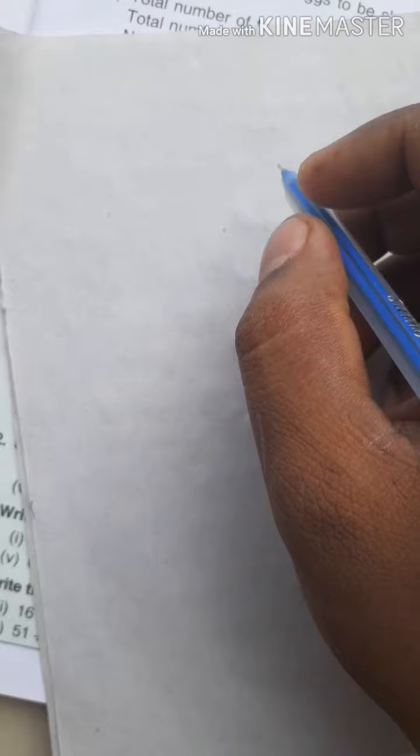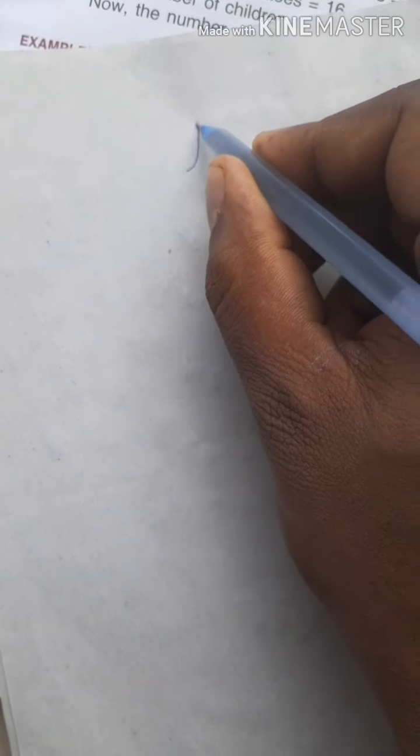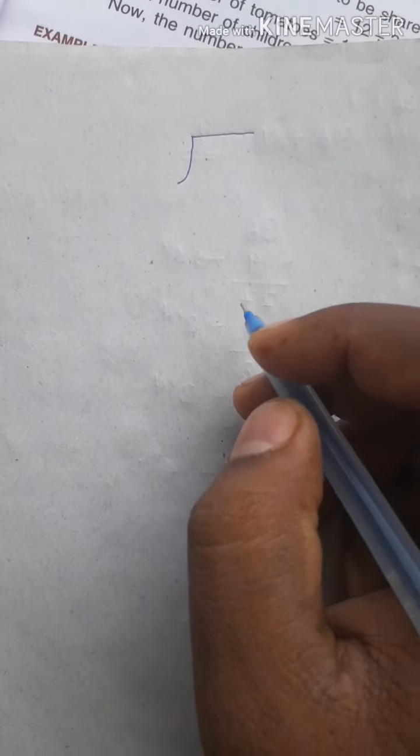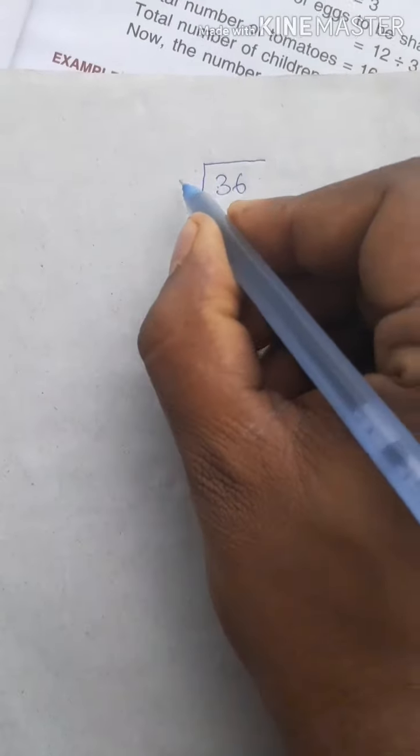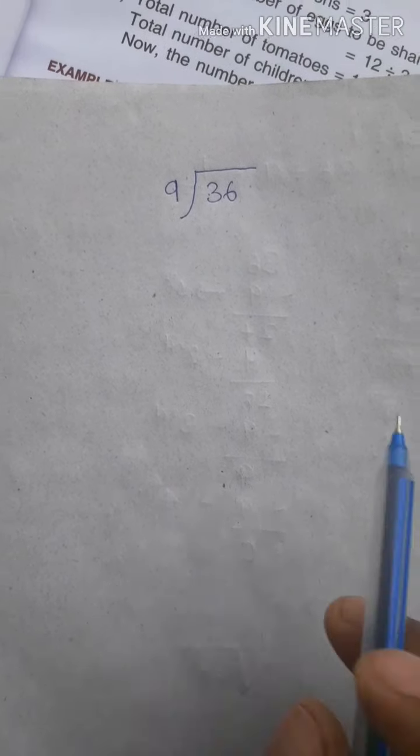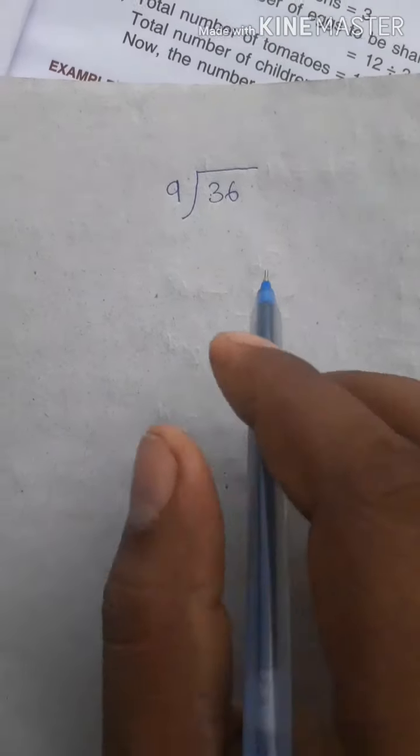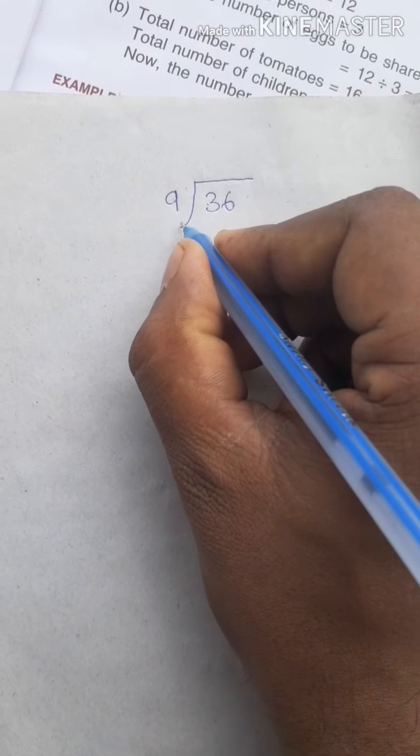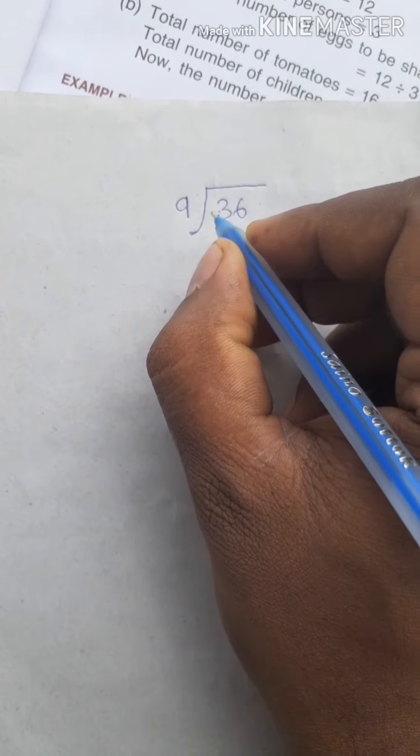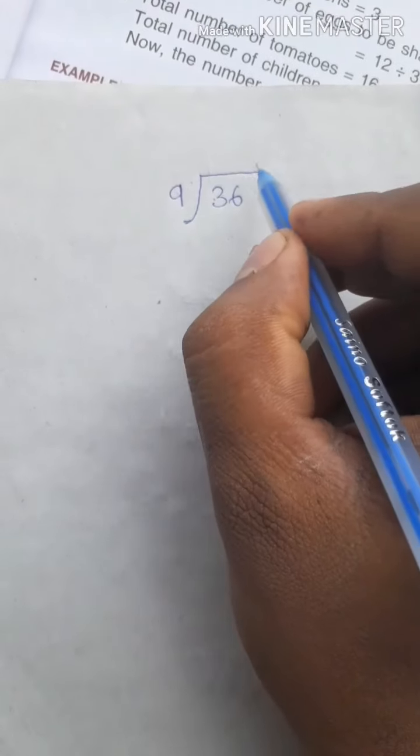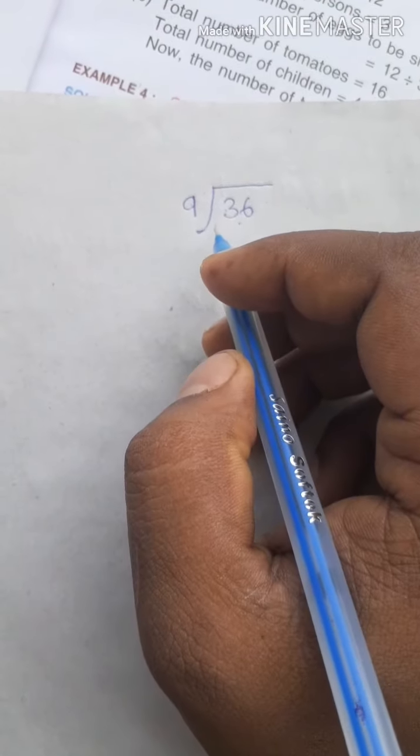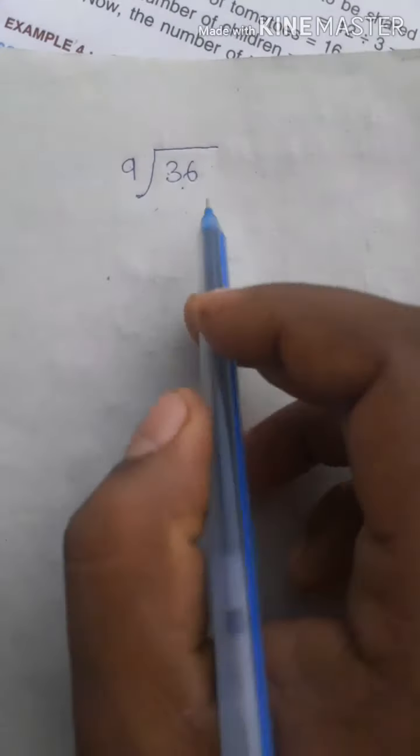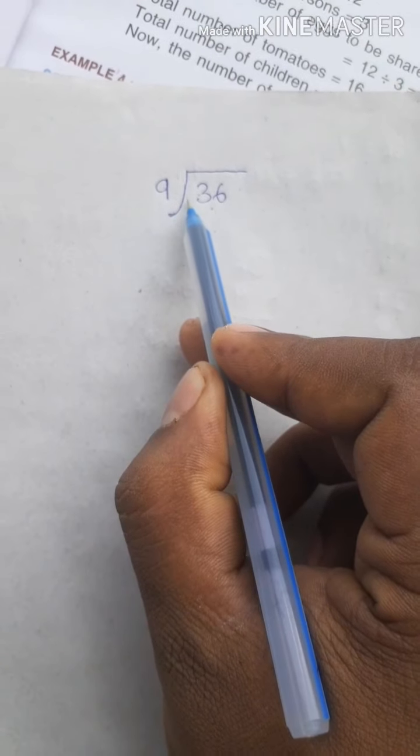One more thing. When we write in terms of division, we make the sign like this. And we will write 36 inside and 9 outside. Once again, when we write in terms of division, we will make like this. And we will write 36 inside and 9 outside.